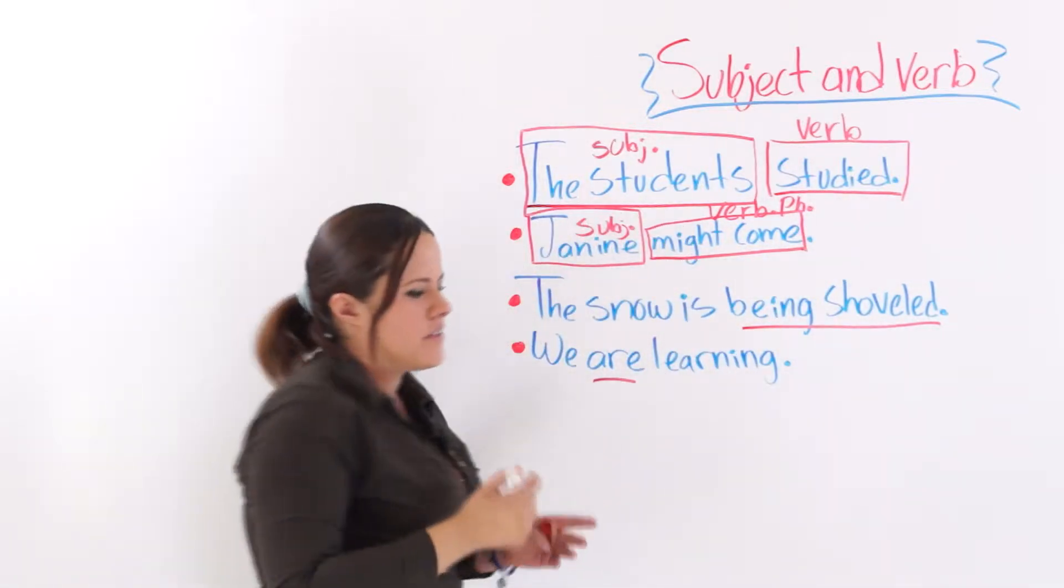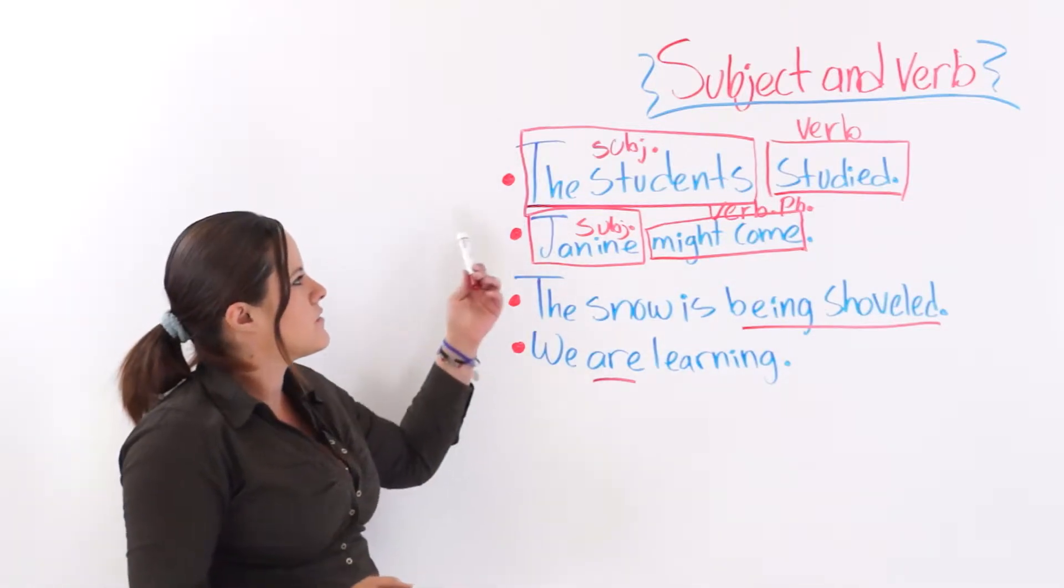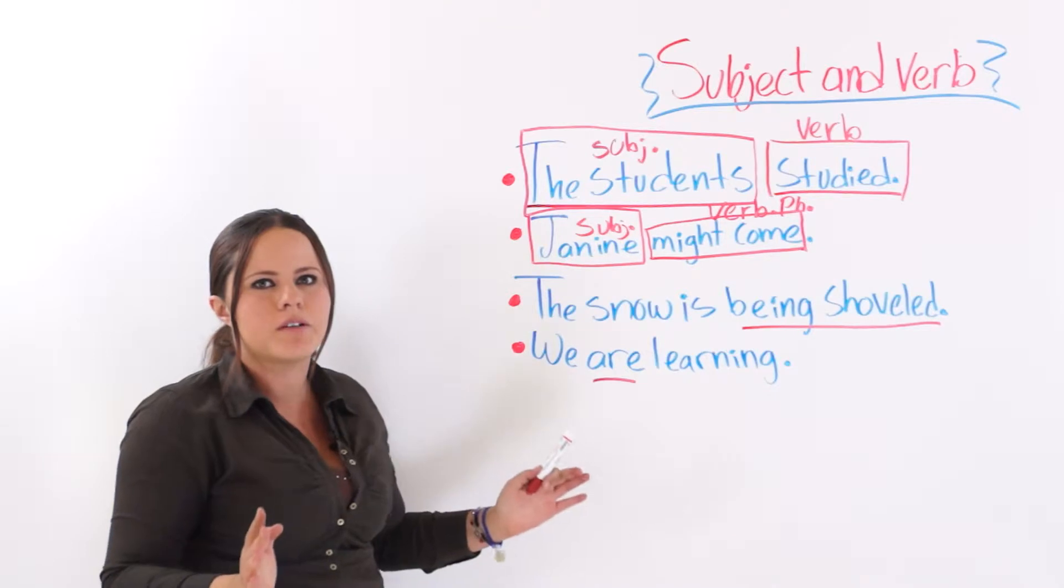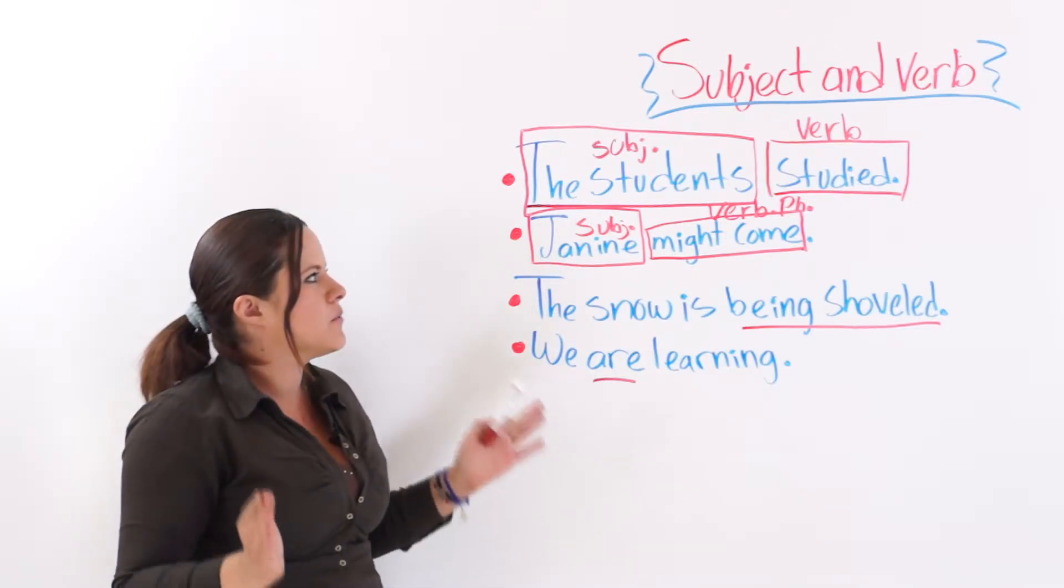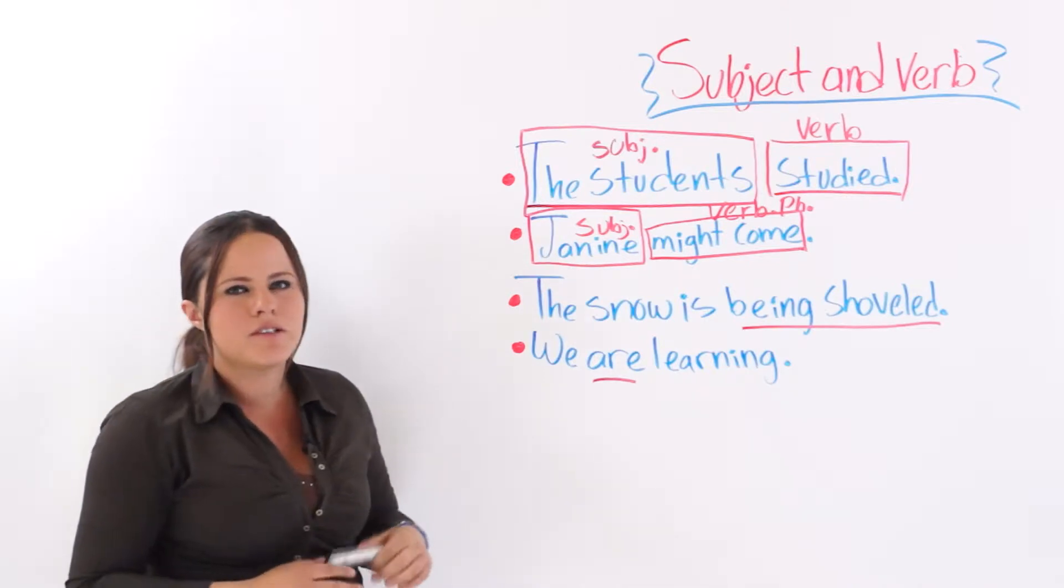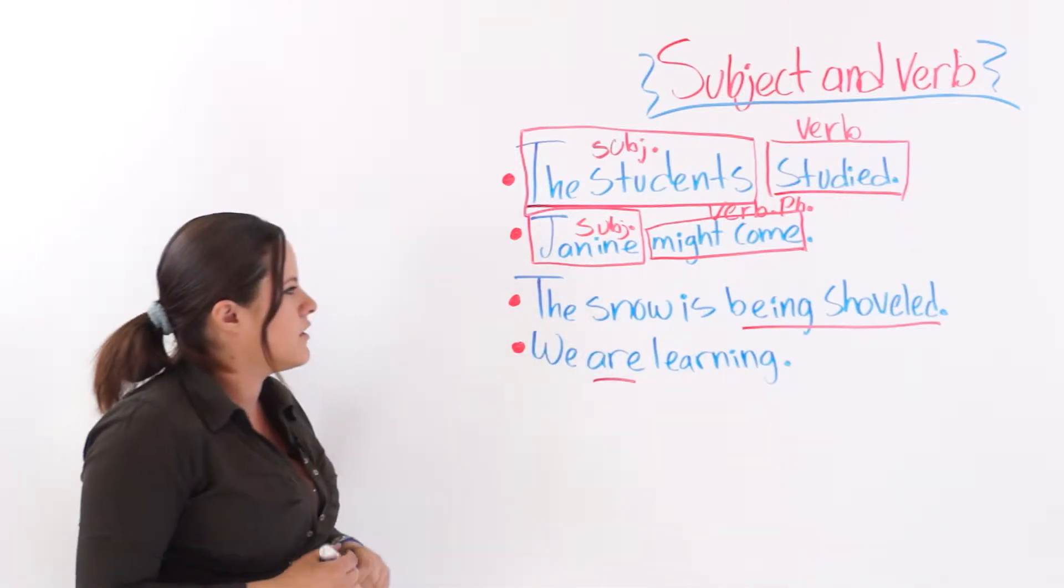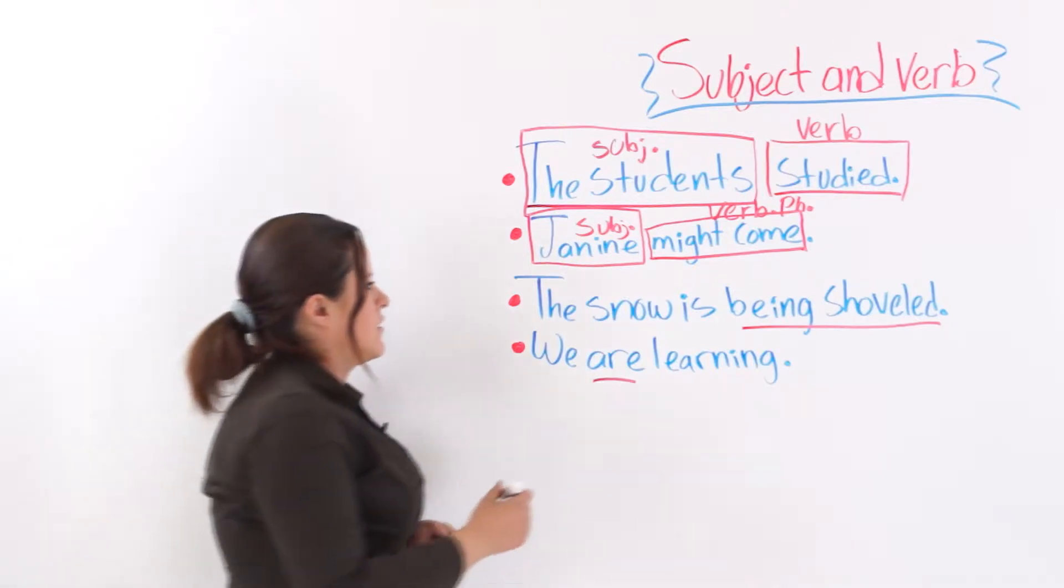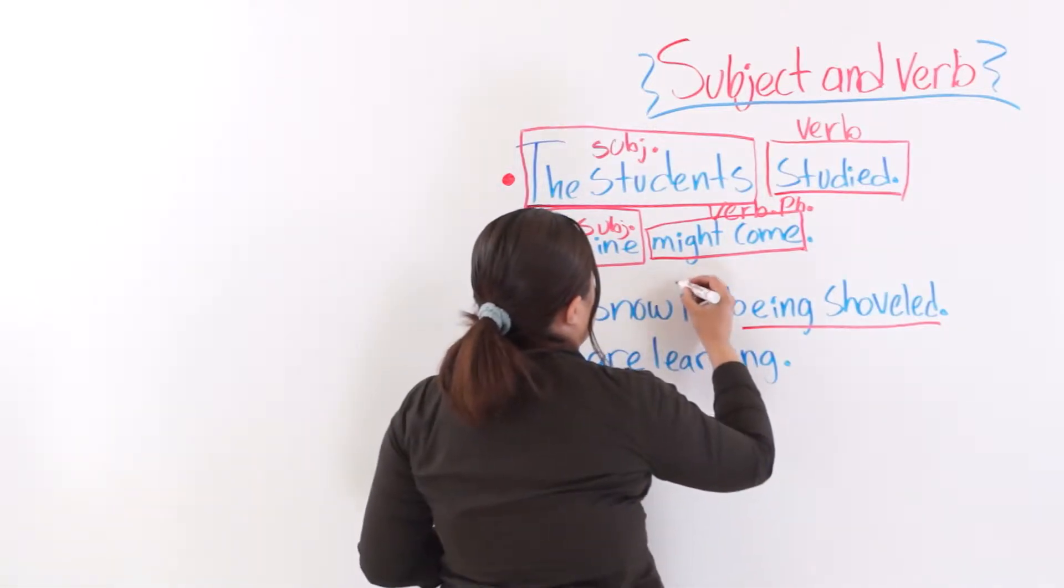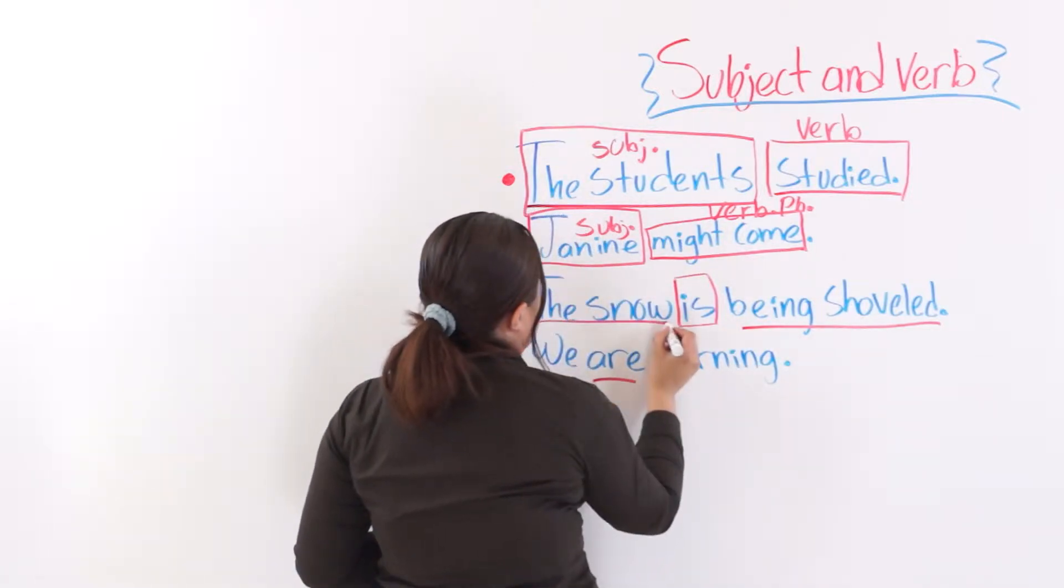So, as you can see here, these sentences make perfect sense. The students studied. Period. You don't need any more complements. You just need the subject and the verb. The snow is being shoveled. The snow is being shoveled. This is a verb phrase with a linking verb. And we know the snow is a subject.